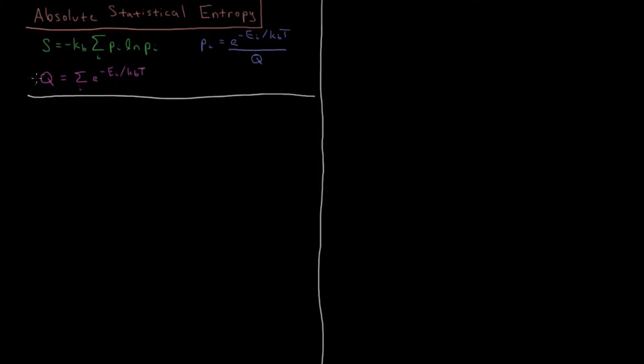But we have this object called the partition function that we can calculate and is a lot easier to work with than the probability for any given state. So we'd prefer to work with the partition function if we could in order to calculate the absolute value of entropy from theory, from statistical mechanics.